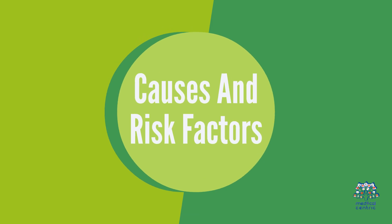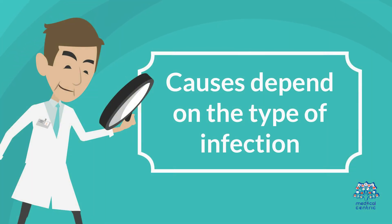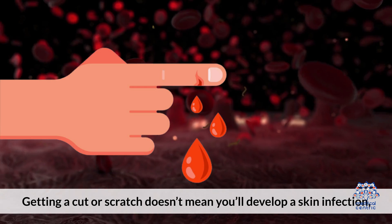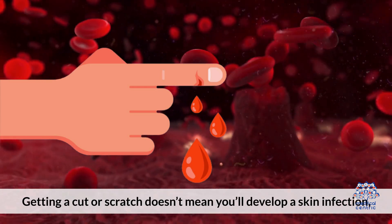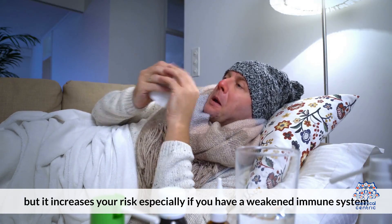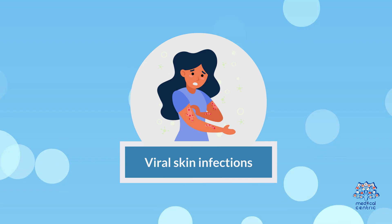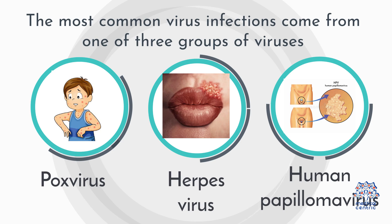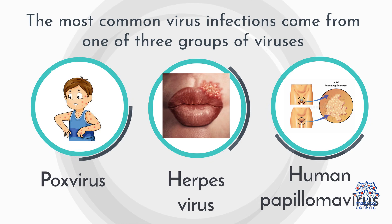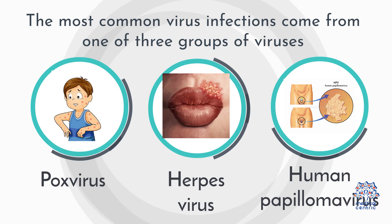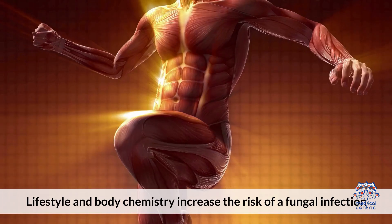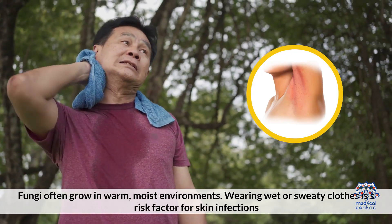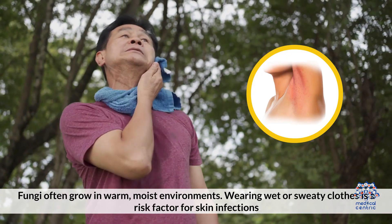Causes and Risk Factors: Causes depend on the type of infection. Bacterial skin infection happens when bacteria enter the body through a cut or a scratch. Getting a cut or scratch doesn't mean you'll develop a skin infection, but it increases your risk, especially if you have a weakened immune system. The most common viral infections come from one of three groups of viruses: pox virus, herpes virus, and human papillomavirus. For fungal infections, lifestyle and body chemistry increase the risk. Fungi often grow in warm, moist environments, and wearing wet or sweaty clothes is a risk factor.